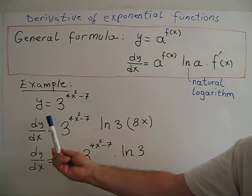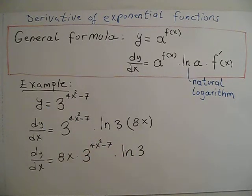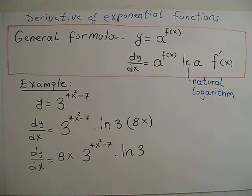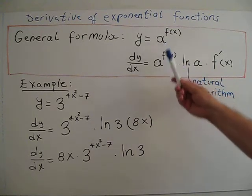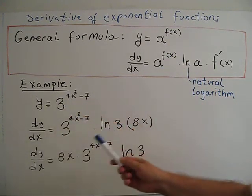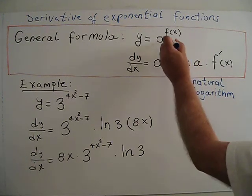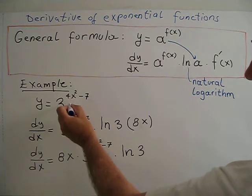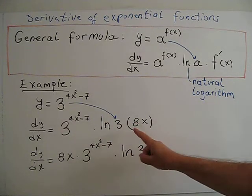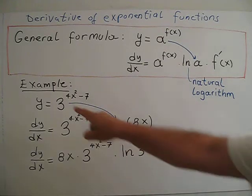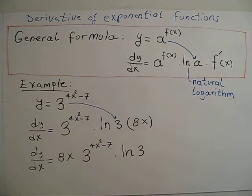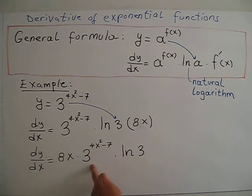As an example, for y = 3^(4x² − 7), the derivative dy/dx is: first, write the same base expression 3^(4x² − 7), then multiply by ln(3), then multiply by the derivative of the exponent. The exponent is 4x² − 7, whose derivative is 8x. Rearranging, we get dy/dx = 8x · ln(3) · 3^(4x² − 7).